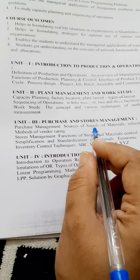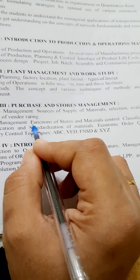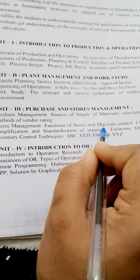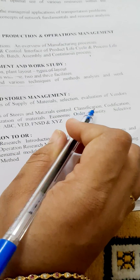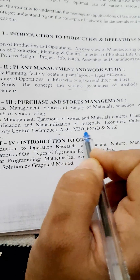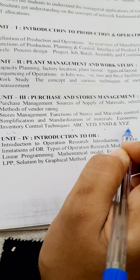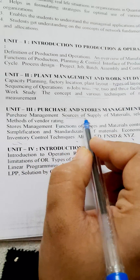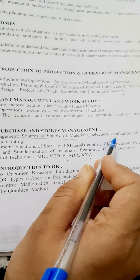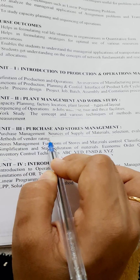Unit three is Purchase and Stores Management. Here you have store management, functions of stores, material control, and classification. Then inventory control techniques: ABC, VED, FNSD, and XYZ. Also, sources of supply of material selection, and evaluation of vendors and methods of vendor rating.